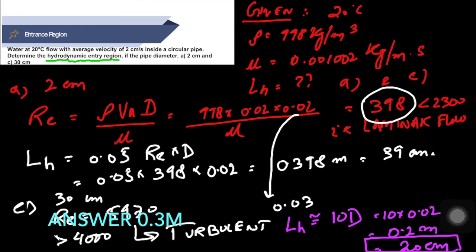You can see that if the pipe diameter increases, the flow becomes turbulent, but turbulent has the lesser hydrodynamic entrance length. So this was the numerical for hydrodynamic entry length, and in the next section we are going to learn about losses in piping.